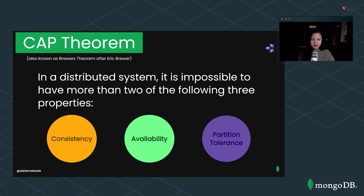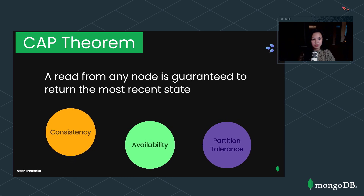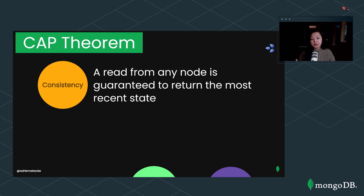We're going to go into each of these properties because it's important to be on the same page with the terminology, especially when discussing them in the context of making choices. First, consistency: it states that a read from any node is guaranteed to return the most recent state.